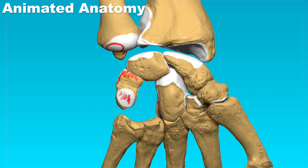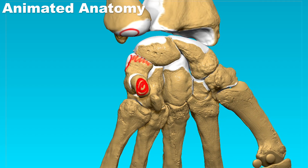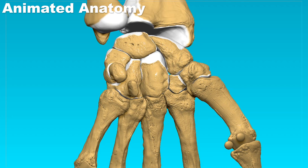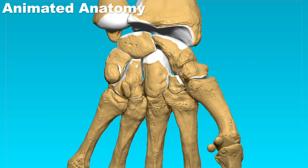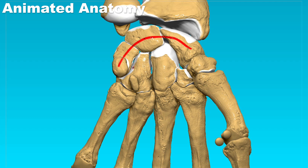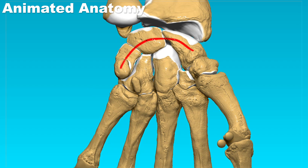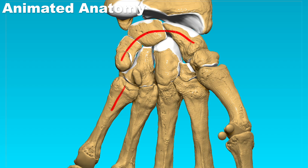The last bone in the proximal row is the pisiform bone, which can be seen here. It articulates only with the triquetrum. Now let us explain the distal row. The proximal row creates this concavity for the articulation of the distal bones, and it also articulates with the ulna and the radius. The distal row, however, articulates with the metacarpal bones, and also with the proximal row of the carpus.